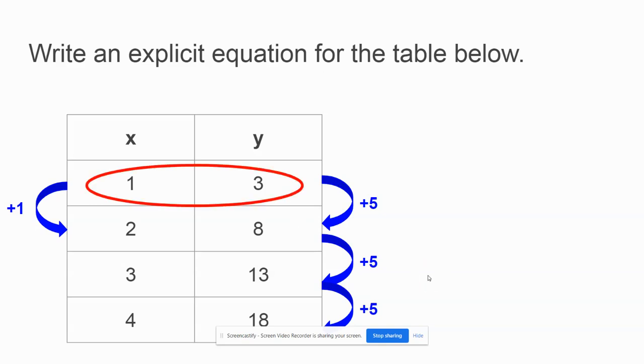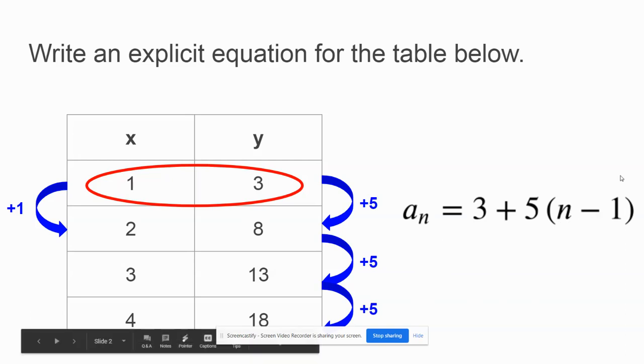The next thing I need to select is my first input and output values. And then I'm going to create that equation with a sub n being equal to my first output plus my common difference times my n value minus my first input of 1. This is my explicit formula for an arithmetic sequence.